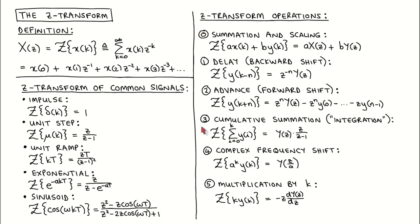Next, we look at six properties of the Z-Transform, where we look at what operations in the time domain amount to in the Z-domain. We will again only state the properties and use them in examples; we will prove some of them at a later stage. Property 0 is numbered 0 since it is not in the textbook, but it is still important to know. Since the Z-Transform is a linear operation, the Z-Transform of a sum of scaled signals is the scaled sum of the Z-Transforms of the individual signals.